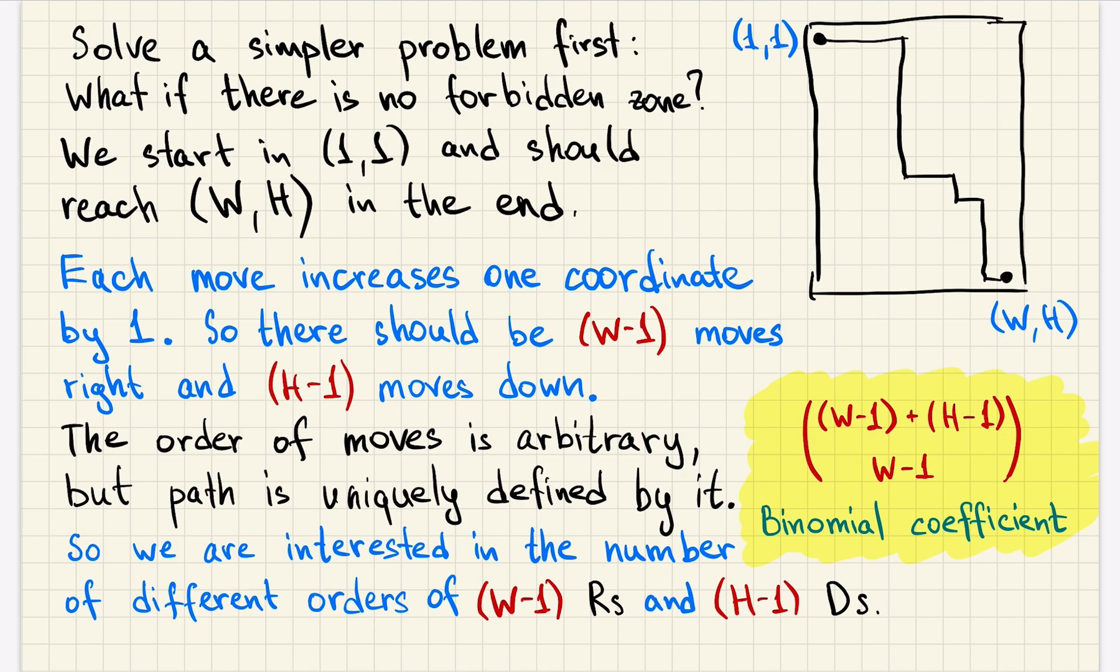So to calculate the number of paths, we can instead calculate the number of orders of moves right and down, which can be imagined as a number of strings that can be arranged from exactly w-1 symbols R and h-1 D. This is a known problem and the answer to the problem is a binomial coefficient. If you don't know what a binomial coefficient is or you didn't know that the answer to this problem, you should google binomial coefficients.